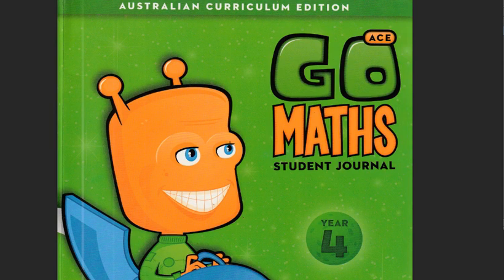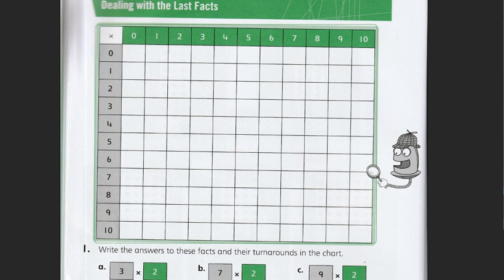Good afternoon everybody. Today we're looking at GoMath's student journal for year 4 for the Australian Curriculum Edition and we're looking at unit 5.5. So we're going to be dealing with the last few multiplication facts. So the first question is write the answers to these facts and their turnarounds or the commutative side of it in the chart.